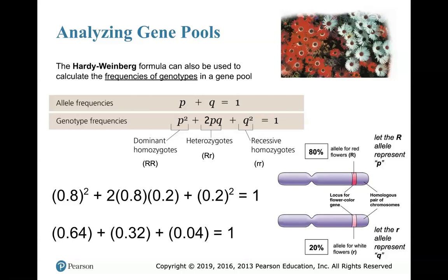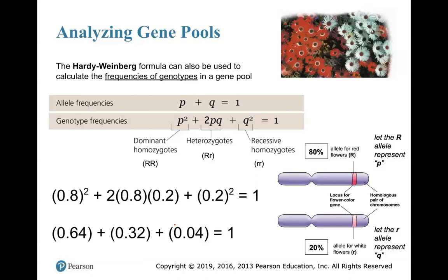For 2pq — the heterozygotes — do 2 times p (0.8) times q (0.2): 2 times 0.8 times 0.2 equals 0.32, so 32% of individuals will be heterozygotes. For q-squared — lowercase r, lowercase r — q is 0.2, so 0.2 squared equals 0.04. Many students forget the leading zero and write 0.4, but this is a small number — if you have a low allele frequency, it should be a small value. So 4%, not 40%, of individuals will be recessive homozygotes.